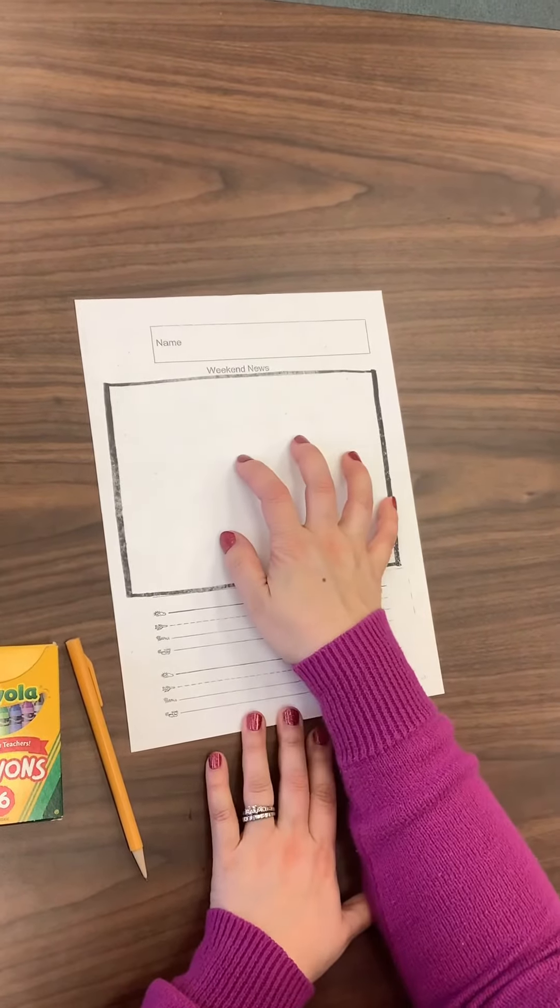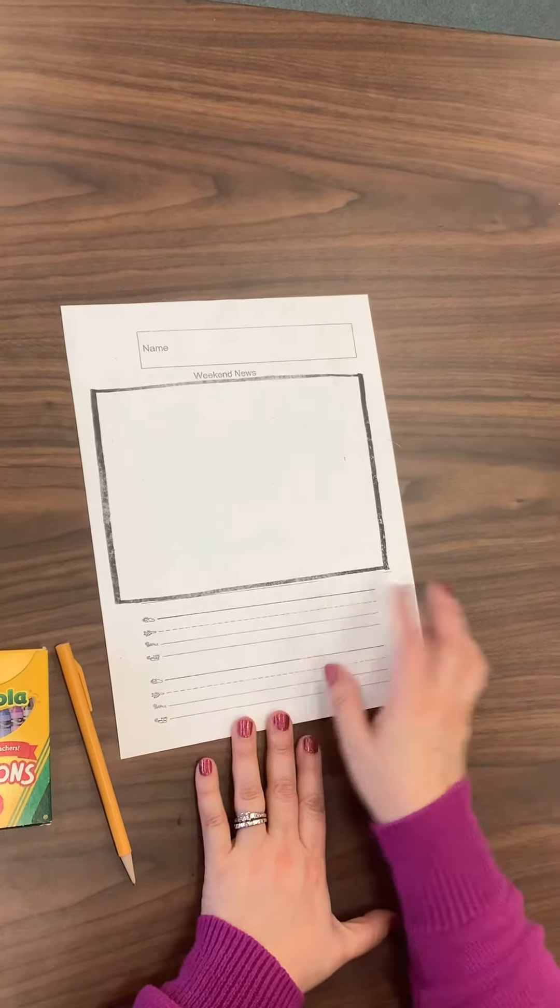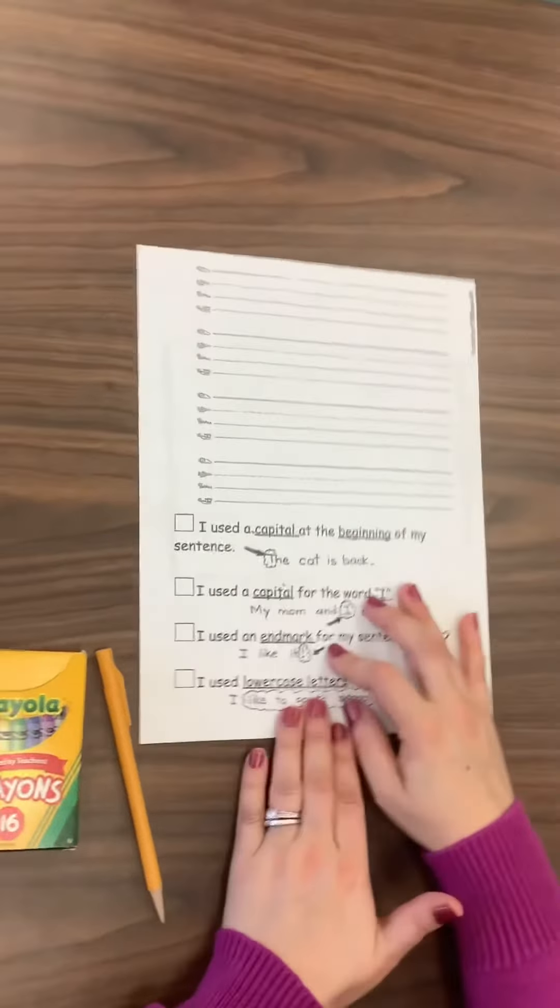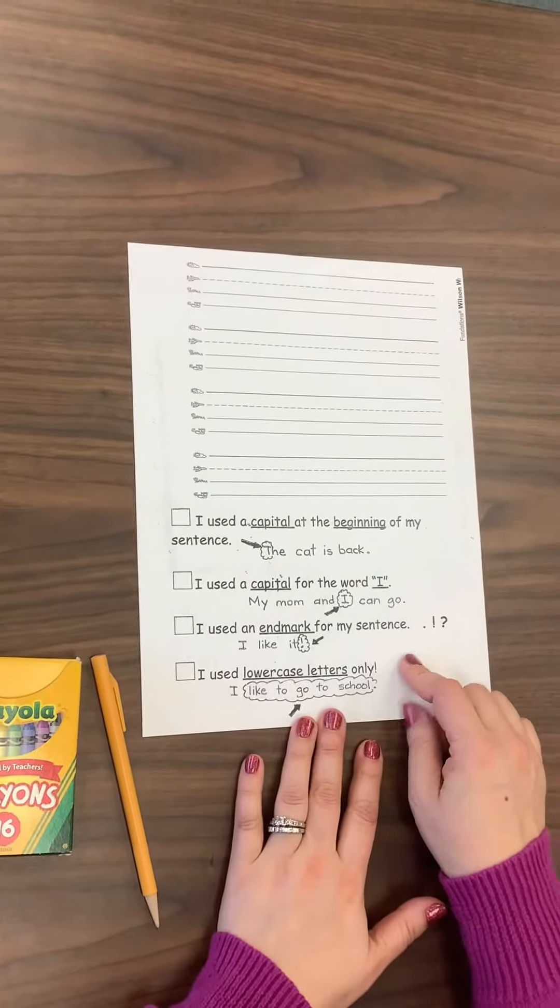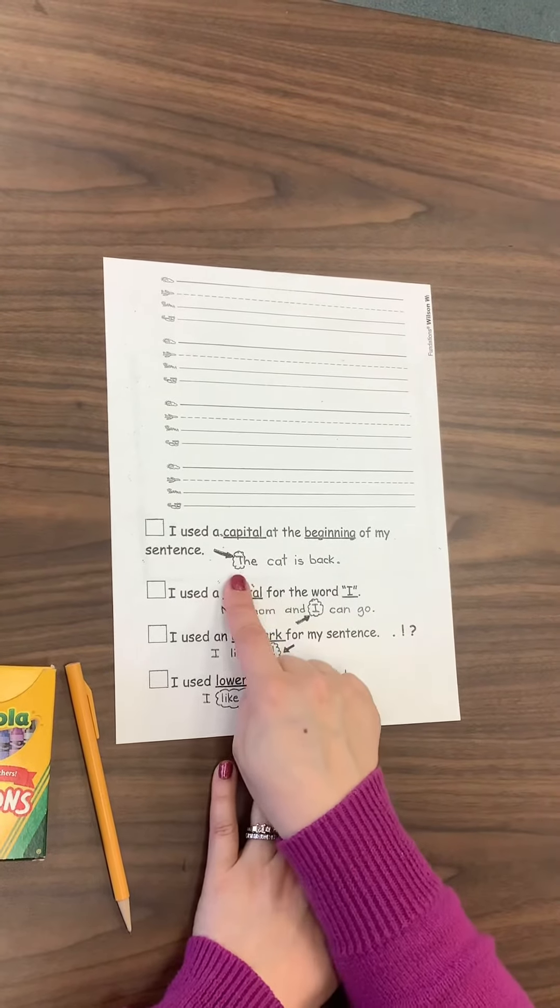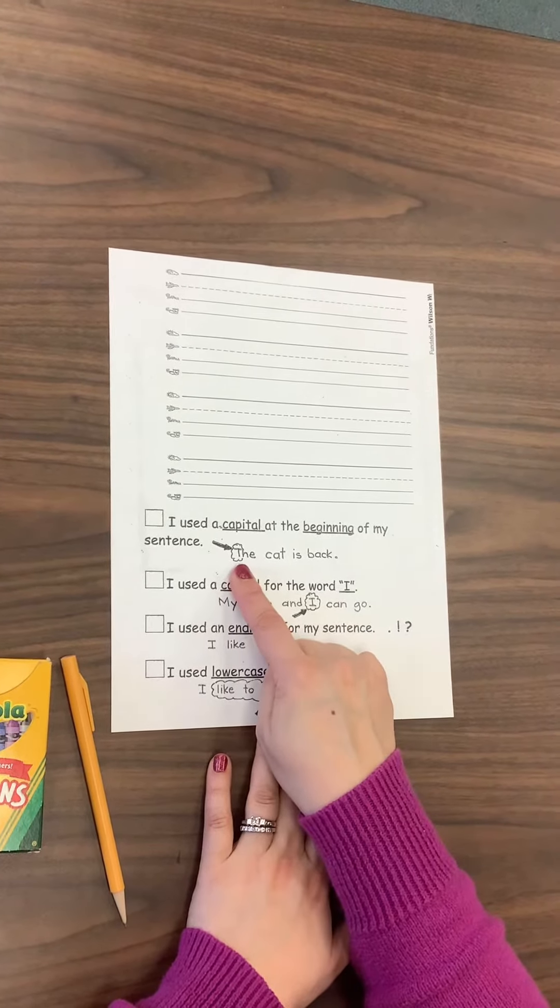When you're done with your five-star picture and your best sentence, we want you to not forget to get your blue crayon and edit your writing. Remember, you're gonna edit to make sure you started your sentence with a capital letter.